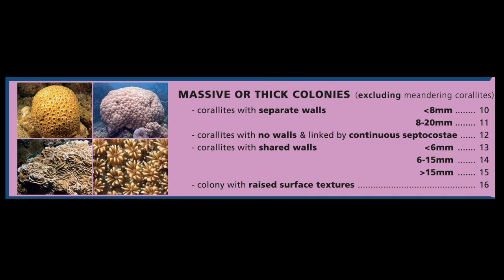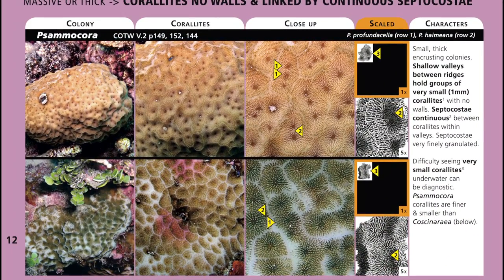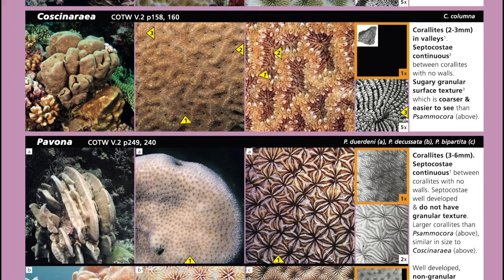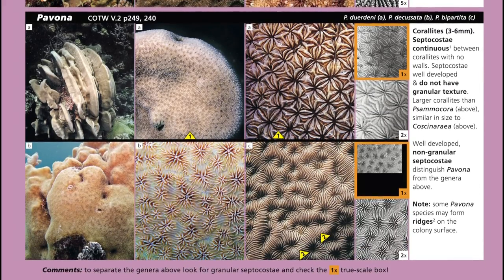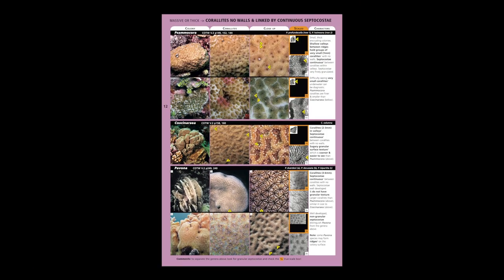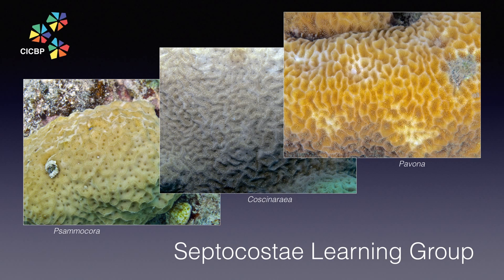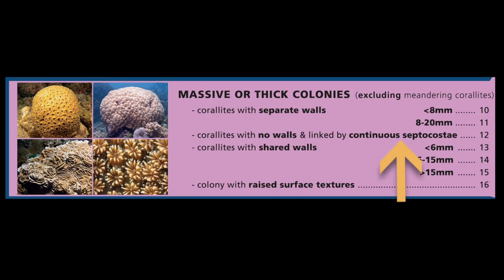Back at the key page, we can see that page 12 contains genera with no coralite walls and septocosti. Note the genera on this page: Samacora, Costanarea, and Pavona. These three common genera can be confusing for beginners, and for that reason, they form the septocosti learning group. The first step in our recipe for coral identification happiness is to limit the scope of the problem. In this case, we need to recognise septocosti when they occur in massive, thick coral colonies. For more detail, go back and watch Coral Finder Toolkit Training Movie 2.